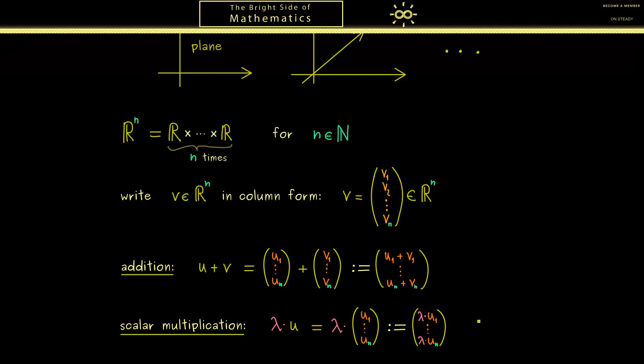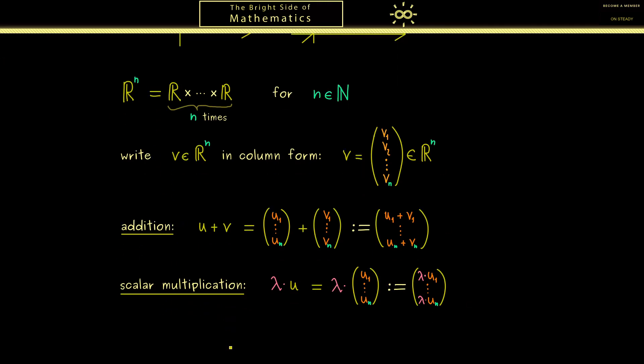And now you should remember the set R^n together with these two operations here is called a vector space. So we could write it like this, and it means we can calculate with vectors in R^n as we have done it in R^2.